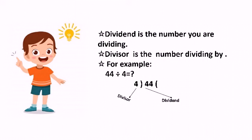For example, if we divide 44 by 4, then 4 is the divisor because it is operating the division, and 44 is the dividend because we want to divide 44 by 4.